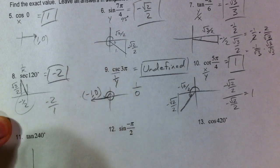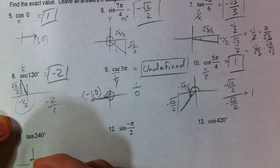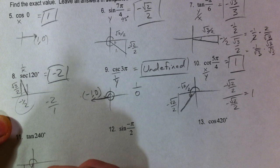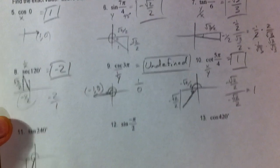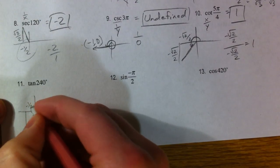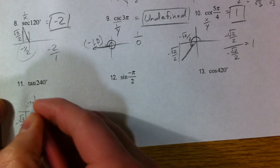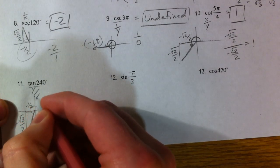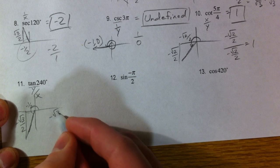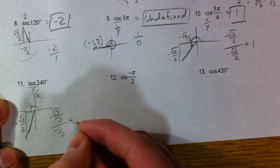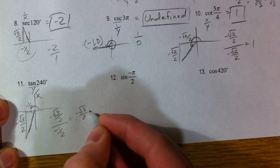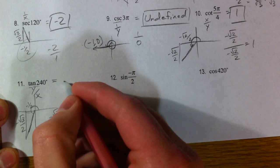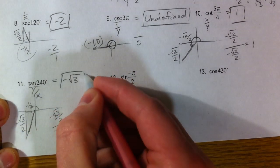Tangent of 240. All the way, almost to 270. We're 60 degrees past 180. And so, we've got negative 1 half and negative root 3 over 2. Short side, 1 half. Long side, root 3 over 2. Tangent is the y over the x. So, negative root 3 over 2 divided by negative 1 half. Negative root 3 over 2 times 2 over 1. 2's cancel out. So, you get negative root 3 over 1 or negative root 3.